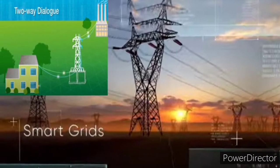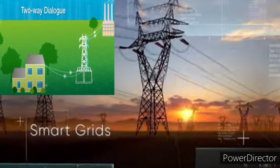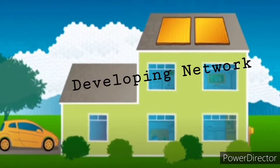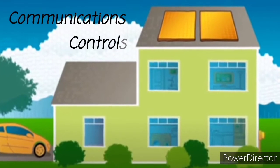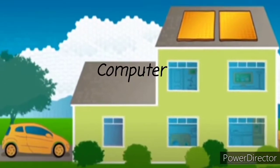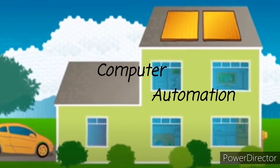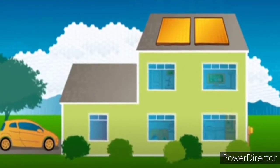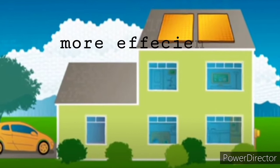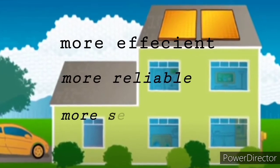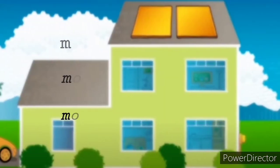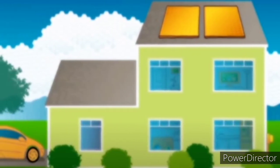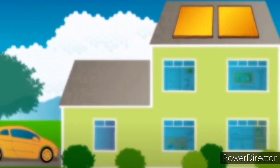A Smart Grid is a two-way dialogue where electricity and information can be exchanged between the utility and its customers. It's a developing network of communications, controls, computers, automation, and new technologies and tools that work together para yung grid is more efficient, more reliable, and more secure. And a more greener because of the reduction of carbon emissions.